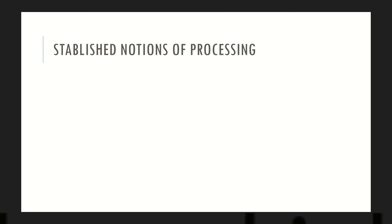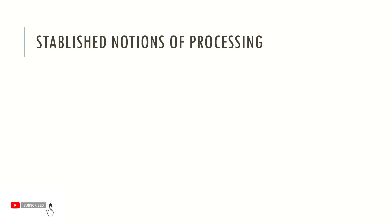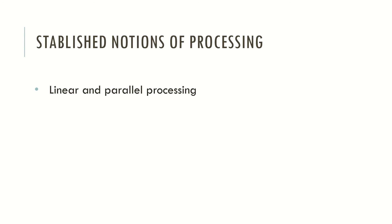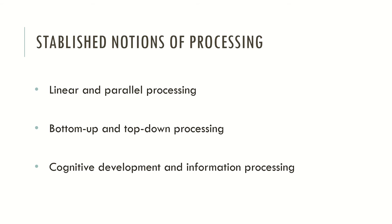Some additional notions are important to retain. In cognitive psychology we tend to look at both linear and parallel processing, because information may follow a sequence of events; however, information may also be processed in a parallel fashion based on connectionist models. Information processing may also follow a bottom-up or top-down approach, meaning it may be triggered by the environment or by inner stimuli. Another established notion is that information processing and cognitive development are tied — individuals in earlier ages may have different types of cognitive processing than individuals in later ages. We will look at the Piaget model, which addresses exactly this, in future videos.